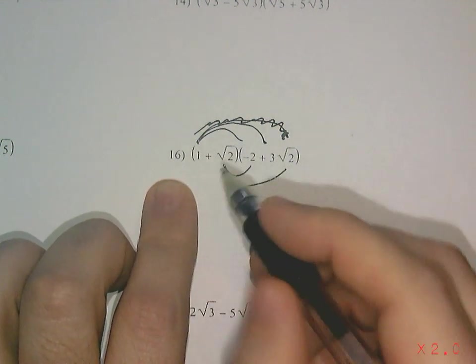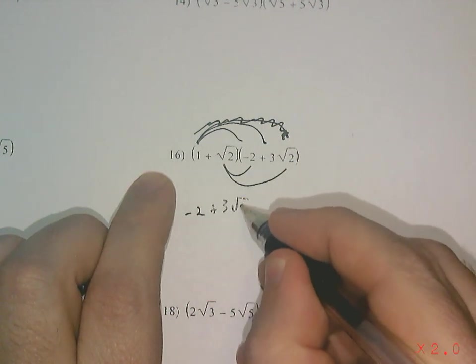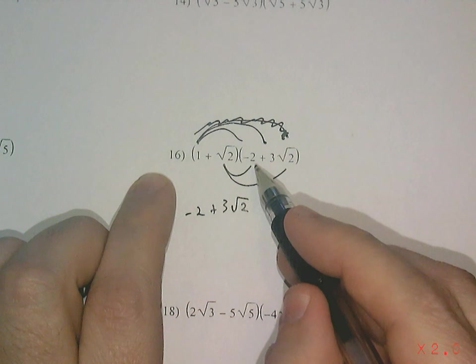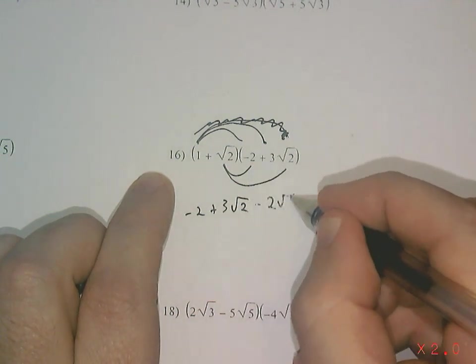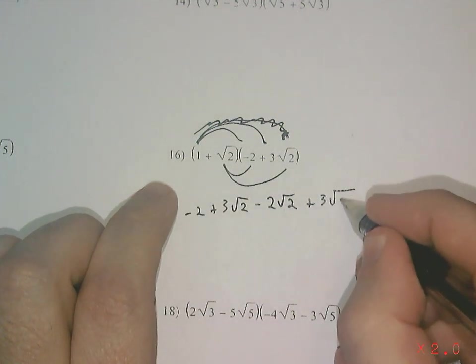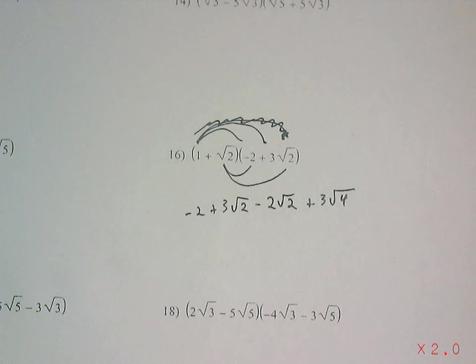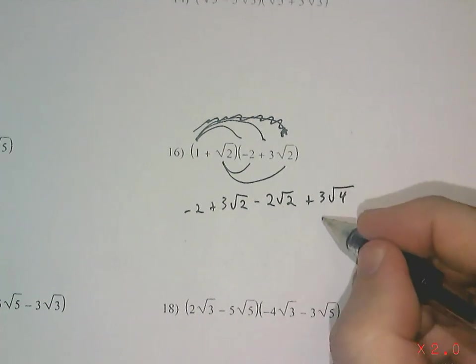When I do that, I'm going to get negative 2 plus 3 square root of 2, and then minus 2 square root of 2, and then plus 3 square root of 4. Well, let's combine or simplify any of these roots that I can. This 4 can square root, so square root of 4 is 2. 3 times 2 is 6.